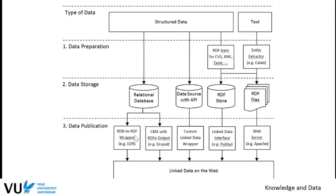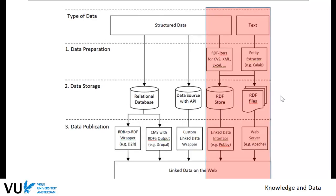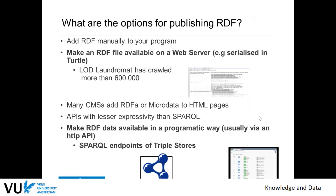There are other ways: we can have access to relational databases with some kind of wrappers, or produce with a content management system. We can produce some HTML pages including some RDF information with the RDF-A format. And if we have an API, we can also write wrappers to produce linked data and publish linked data automatically. In this course, we focus on publishing RDF files directly so that people can load them into their own programs and parse and work with them, or publishing RDF data in a triple store or an RDF database.